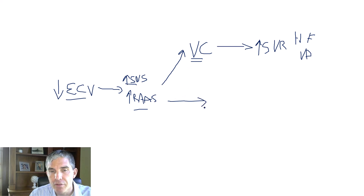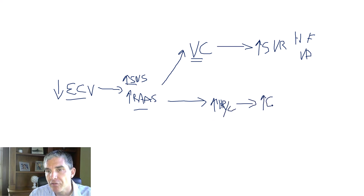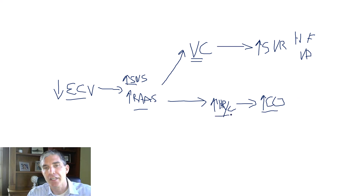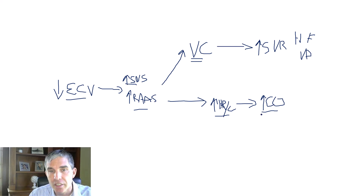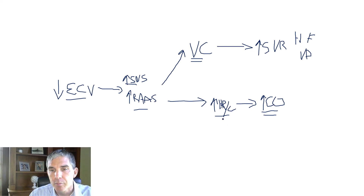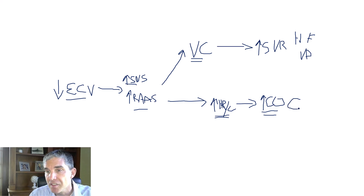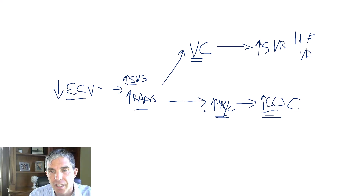Another response mediated through the sympathetic nervous system is that heart rate and contractility of the left ventricle will increase. This is an attempt to raise cardiac output to compensate for low ECV. In patients with heart failure, the cardiac output will still be below normal — the body cannot compensate enough to raise it to a normal or above-normal level. In volume depletion, cardiac output will also remain low, as there's simply not enough blood volume. In patients with cirrhosis, however, they will have a cardiac output above the normal range — a classic finding of cirrhosis — because of this compensatory response.